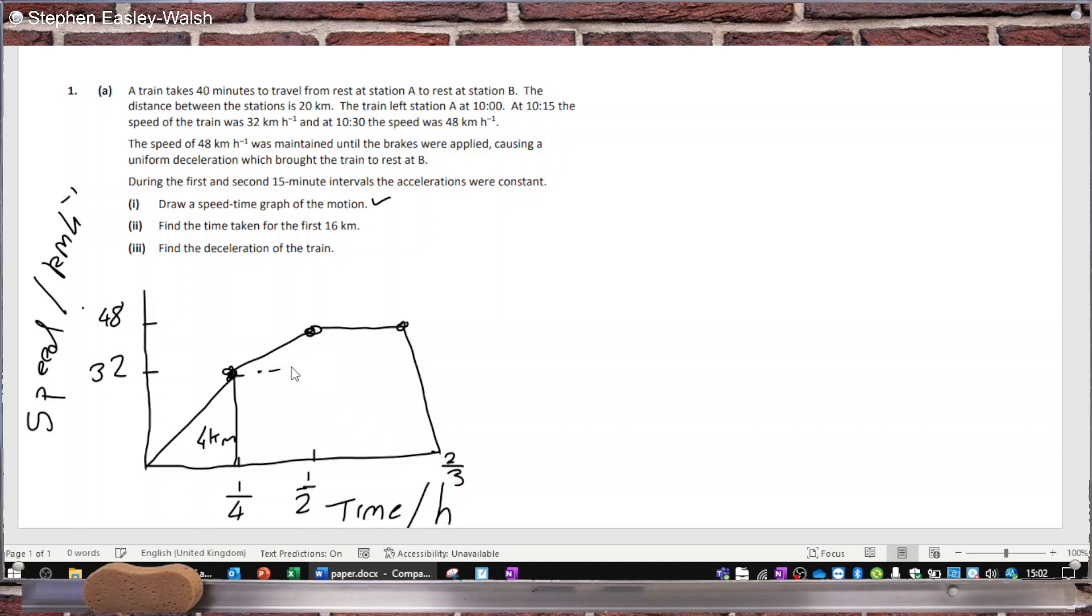Okay, so the area for the first triangle is 4 kilometers. And then if I separate this now, 0.25 times 32, that's 8 kilometers.